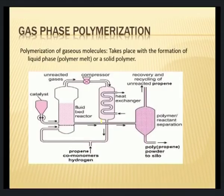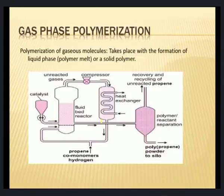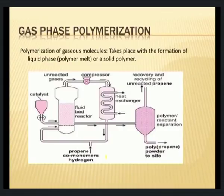Gas phase polymerization is used for monomers that are gaseous in nature and cannot be prepared in solution medium. When such gaseous molecules are converted into a polymer, the polymer could be a solid — for example, ethylene and propene are gases used as monomers later converted into polyethylene or polypropylene, which are basically solid.